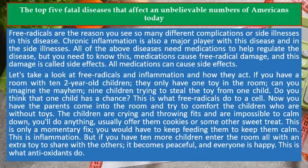Let's take a look at how free radicals and inflammation act. If you have a room with 10 two-year-old children and only one toy in the room, can you imagine the mayhem — nine children trying to steal the toy from one child? This is what free radicals do to a cell. Now imagine the parents come in and try to comfort the children without toys. The children are crying and throwing fits; you'll do anything, usually offer them cookies or some other sweet treat. This is only a momentary fix — you would have to keep feeding them to keep them calm. This is inflammation.